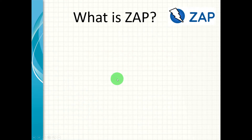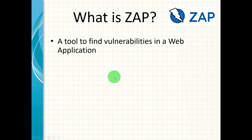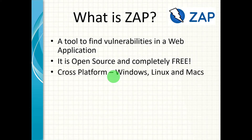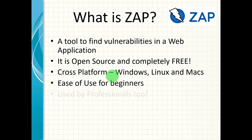So what is ZAP? It's a tool to find vulnerabilities in a web application. It is open source and completely free. It is cross-platform, which means it can be installed on Windows, Linux, or Macs. It's very easy to use for beginners who want to get their hands dirty in security or pen testing, and it is used by professionals too. Since it is used by beginners, that doesn't diminish its quality or functionality.